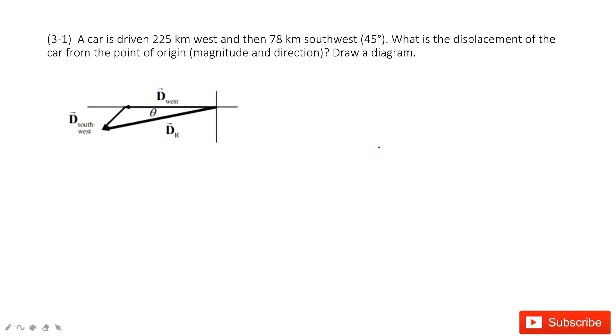This one is to do the calculation for vectors. We can see a car is driving 225 km west. So this is the first displacement to the west. And then 78 km southwest.